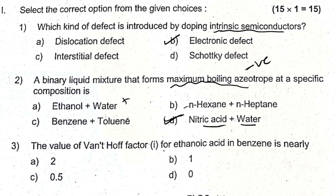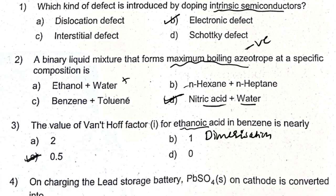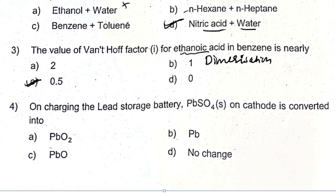The value of the van't Hoff factor i for ethanoic acid in benzene — ethanoic acid in benzene will undergo dimerization. So due to dimerization, the value of the van't Hoff factor becomes nearly 0.5, because 2 molecules come together to form 1 molecule. That's why the answer is 0.5.